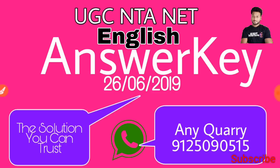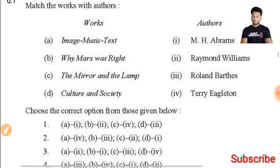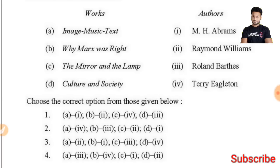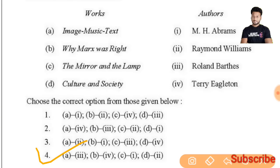Let's start with the very first question of this paper: match works from their authors. If we know any single author and their related work — for example, 'The Mirror and the Lamp' has been written by M.H. Abrams — we start matching C to 1. In the options, C-1 is in the fourth option, so the right answer is the fourth one.